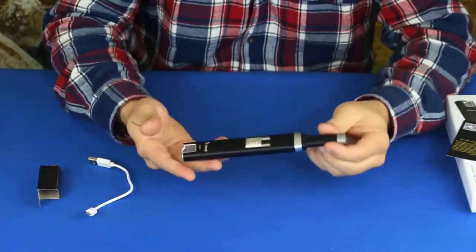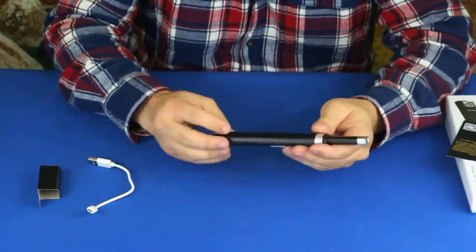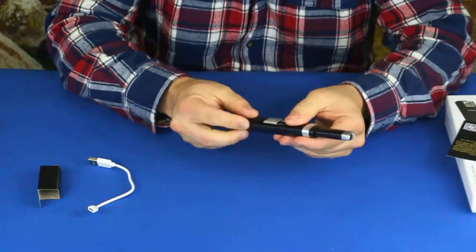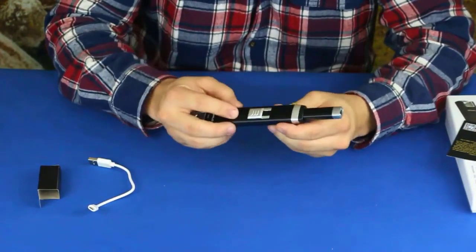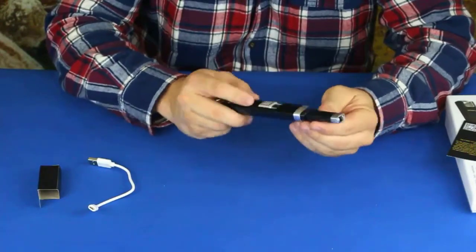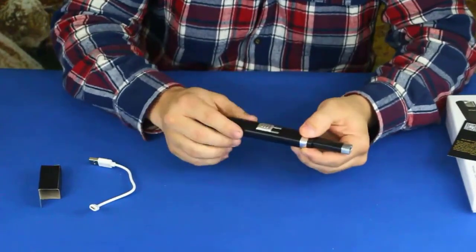And then you have your unit. The unit itself feels like a thin aluminum kind of metal piece here. I think that's what the black area is.